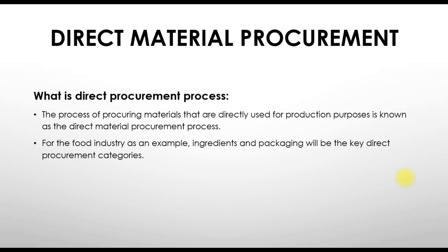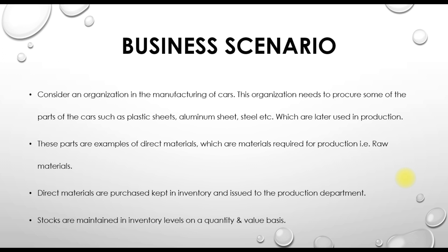For example, in a car manufacturing company, they need to procure parts such as plastic sheets and aluminum sheets, which are raw materials or semi-finished goods. These items are used later in production and are our direct materials. Direct materials are purchased, kept in inventory, and issued to the production department. Stocks are maintained in inventory at both quantity and value basis.